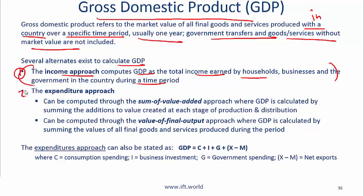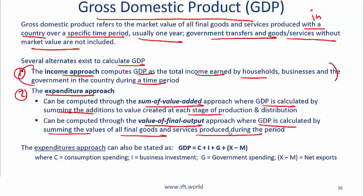You can also calculate GDP using the expenditure approach or the sum of value added approach, where GDP is calculated by summing the value addition at each stage of production and distribution. An example in the curriculum is the milk retail supply chain, as well as the auto industry. GDP can also be computed using the value of final output, by summing the values of all final goods and services produced during the period.